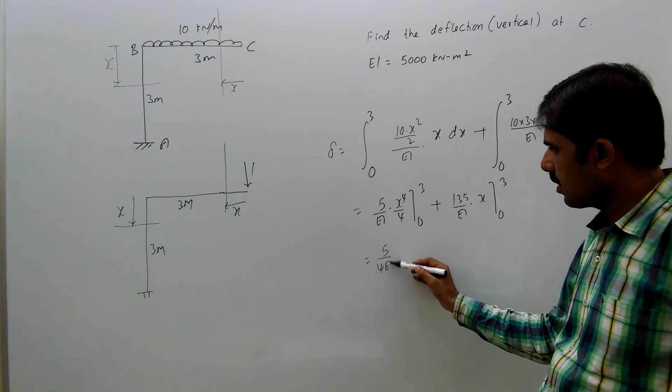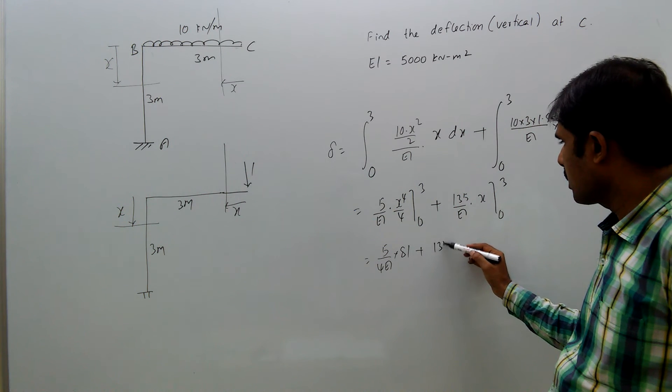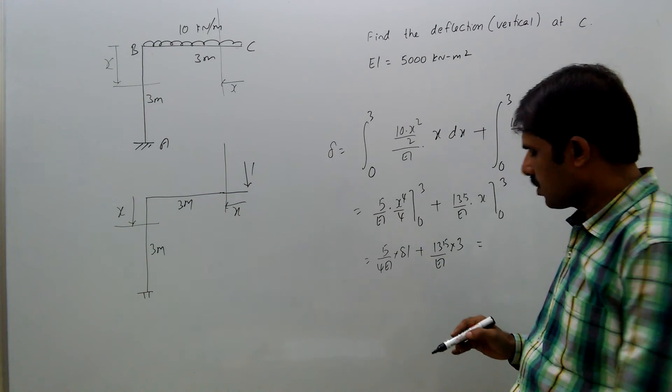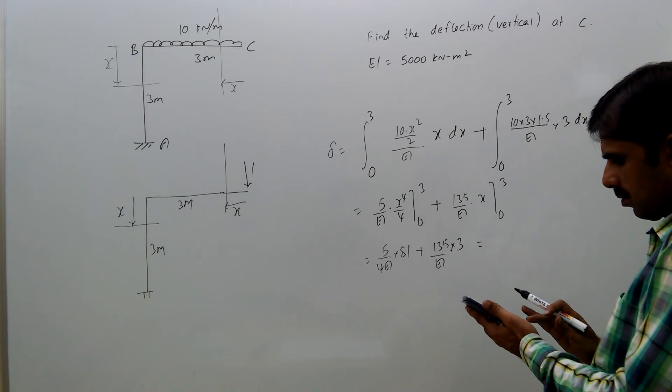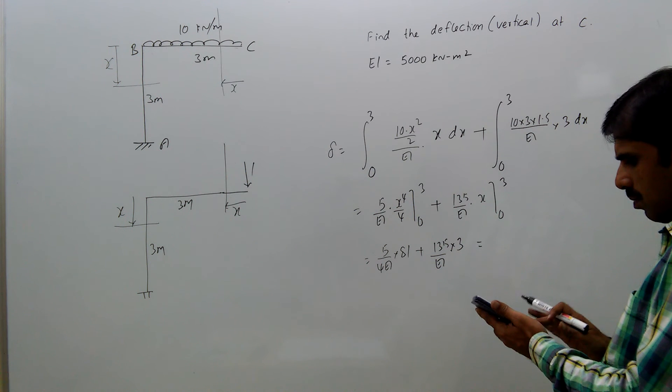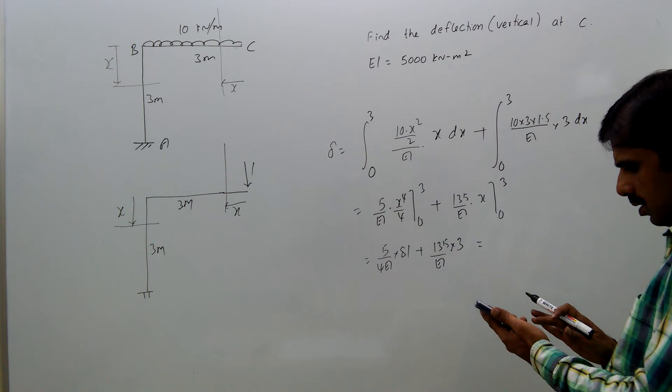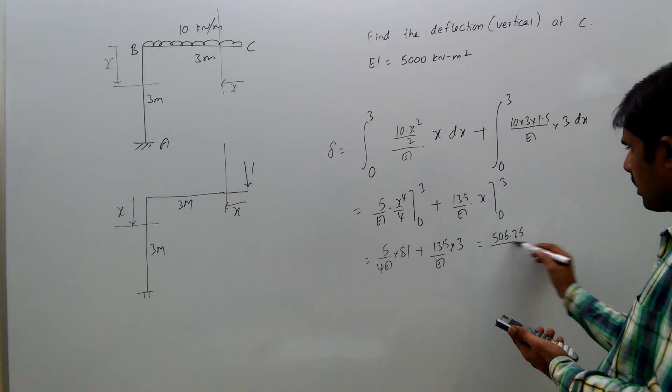That equals 5 by 4EI into 3 to the power 4, which is 81, plus 135 by EI into x, which means 3. That equals 5 into 81 by 4 plus 135 into 3. That's 506.25 by EI, which means